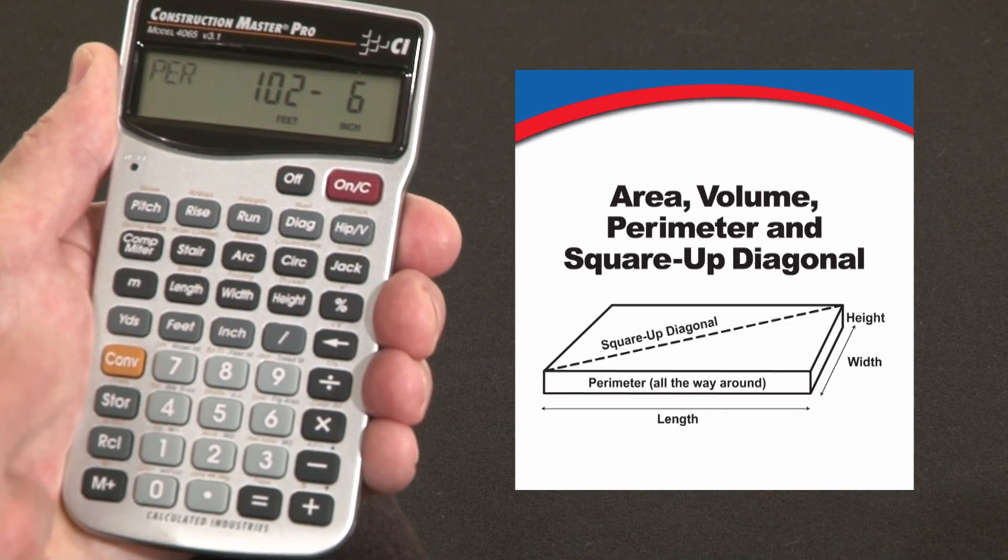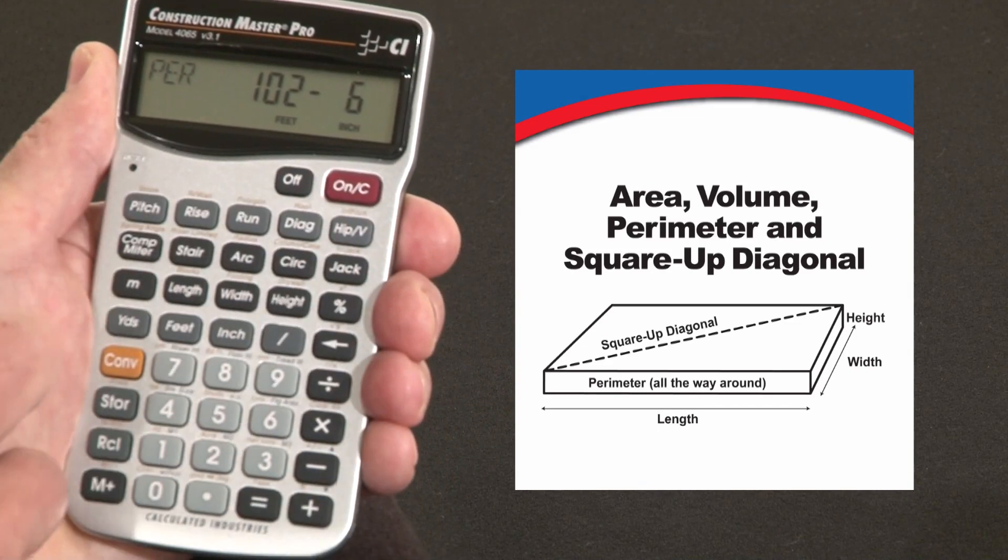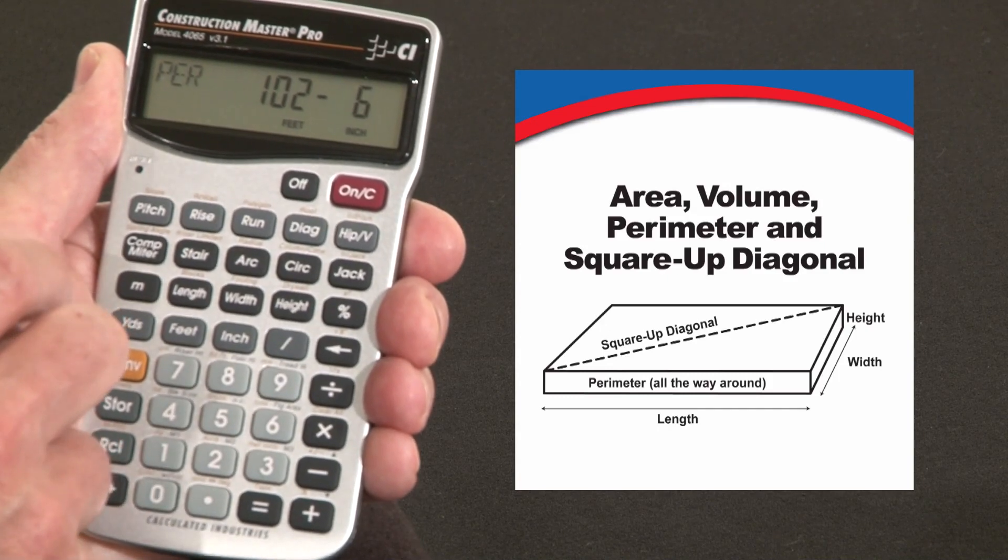Press it again. There's the perimeter. That's how many lineal feet around this pad you'll need for any kind of form boards or trim or treatment like that.